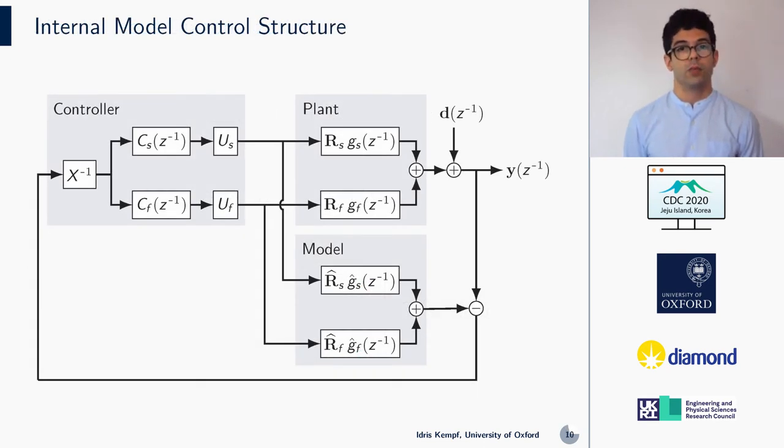For the feedback system, we choose the internal model control structure. The GSVD is included in this diagram, where we use the inverse of X to map the feedback term into the generalized mode space, and the matrices US and UF to map the computed inputs back into the original space. In practice, we are careful with inverting the matrix X because the synchrotron represents a strongly directional system, and we use a regularized inverse instead. I will now briefly elaborate on how we design the SISO controllers before presenting some performance figures.